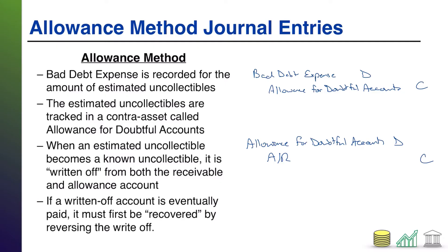Last thing that can happen: what if you write off an account, but eventually whoever you wrote off gets back in financial health and says they want to make good on their payment — they ultimately pay you? Think of what a payment of AR looks like: it traditionally involves getting cash and taking the AR off the books.